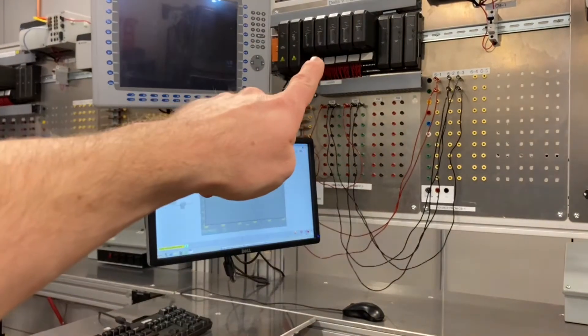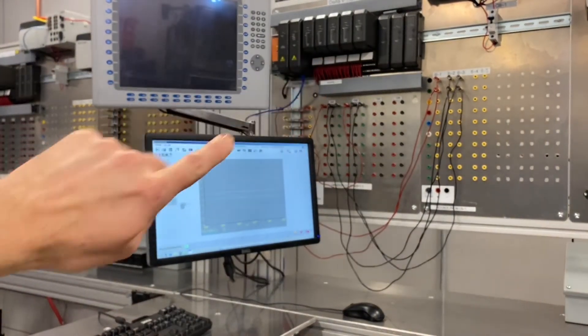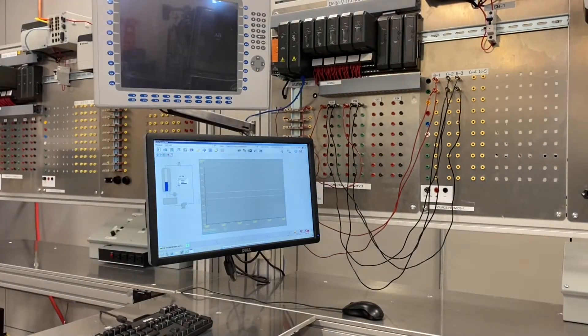Right here, we have our control system. This does our controller calculation. Right here, we have a screen, so we can send values to our controller.